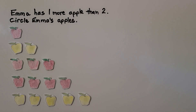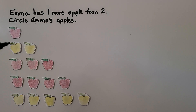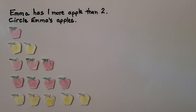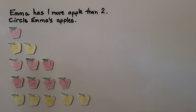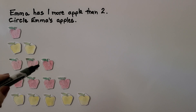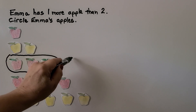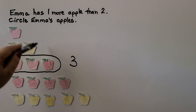Here we have a lot of apples in groups: one apple, two apples, three apples, four apples, and five apples. Emma has one more apple than two — circle Emma's apples. Which group has one more than two? Here's two. The group that has one more is three. Three apples would be one more than two apples.